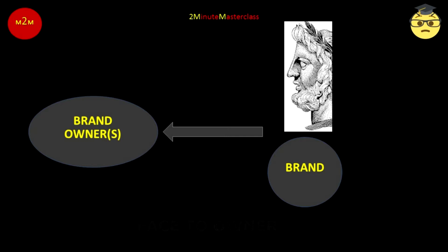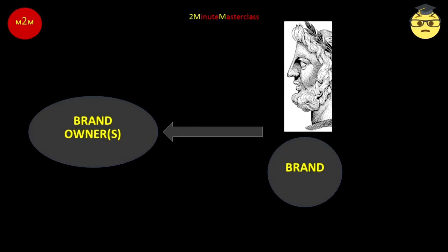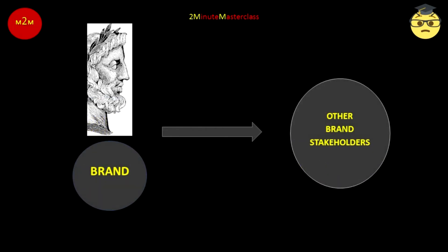The second part of our course will look more closely at the first face of the brand, turned Janus-like towards the owner. So if the first part, Marketing in Essence, is about what marketers do, the second part, Marketing in Context, is about why we do it, how we are rewarded, and how we must interact with brand owners as we practice.